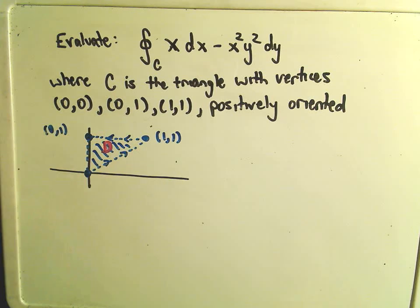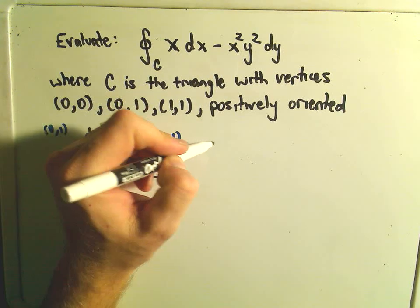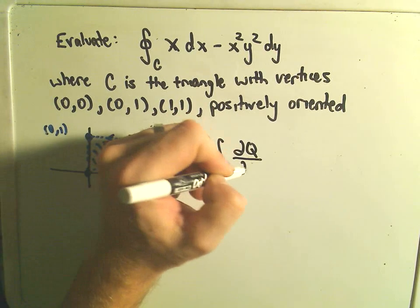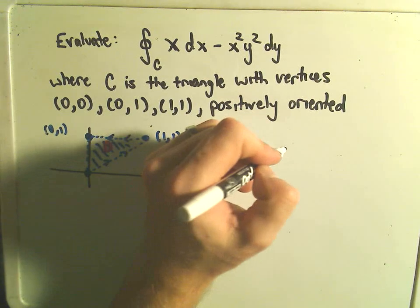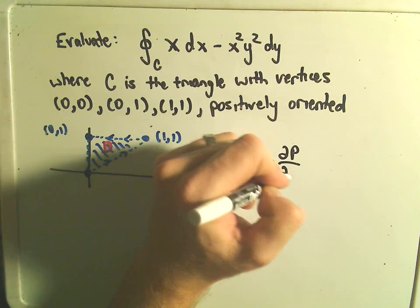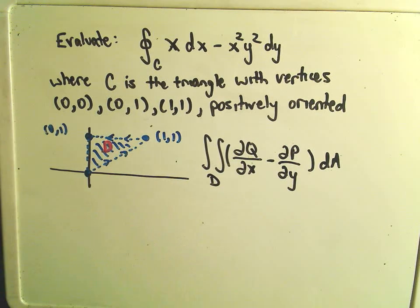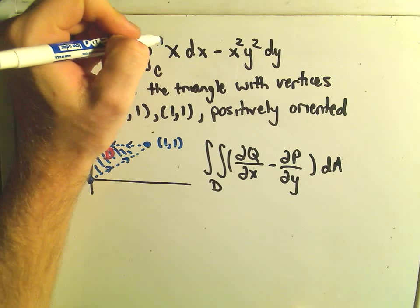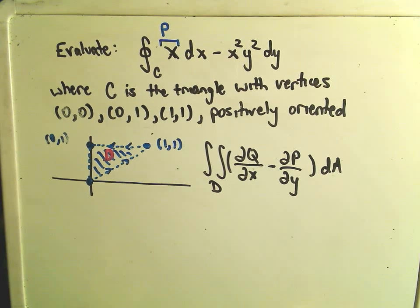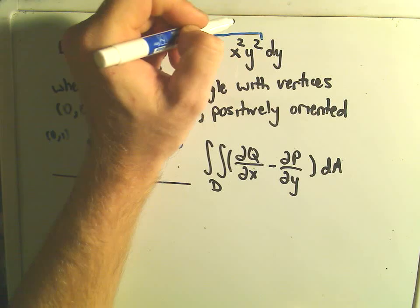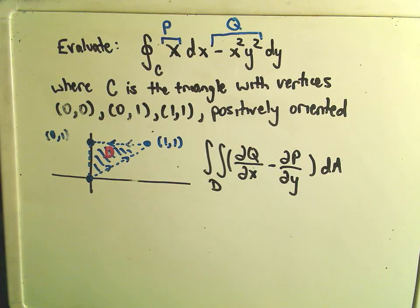So we're going to use Green's theorem here, and it says all that we do is we just go from our line integral to a double integral. It says we take the partial of q with respect to x minus the partial of p with respect to y, over our region. And again, just the way we had things labeled a second ago, whatever's in front of the dx, that's our p function, and whatever's in front of the dy, that's going to be our q function, so make sure that you include the sign there.